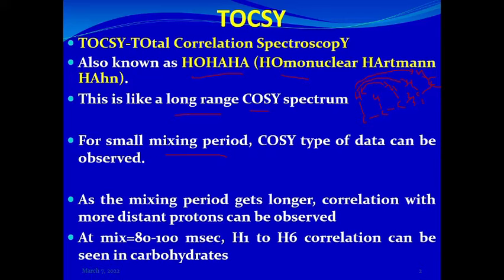If the mixing period is very small, around 20 to 30 milliseconds, we can only get a COSY-type spectrum showing correlations between geminal and vicinal protons. But with a longer mixing period, we can see correlations between more distant protons. For example, at about 80 to 100 milliseconds you can see correlations between H1 and H6 of carbohydrates, meaning you can see protons correlated across the whole carbohydrate ring.